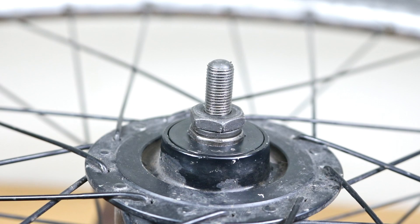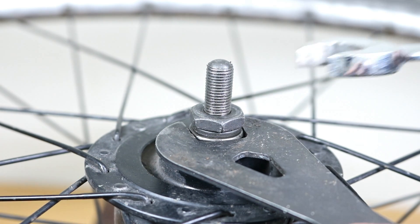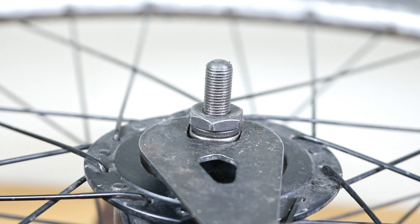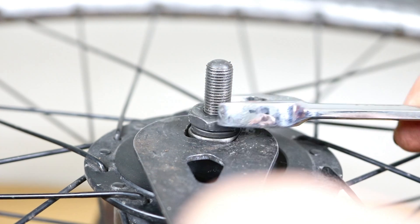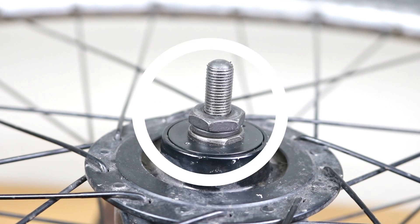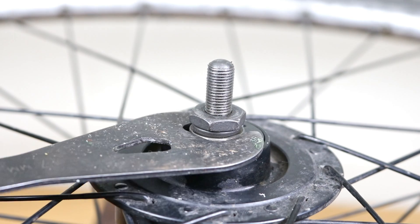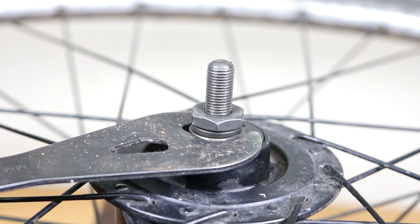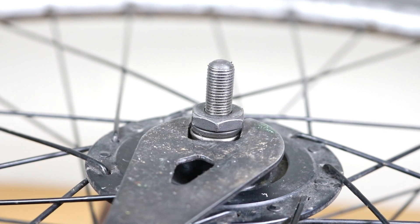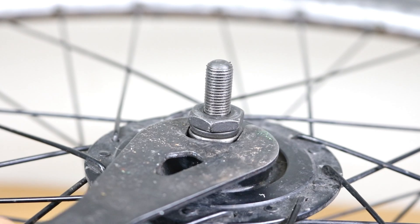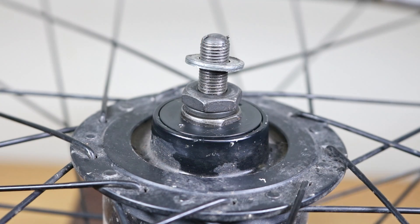Check if the axle spins without any wobbling. If it feels too loose, use the 17mm cone spanner to hold the cone in place and the 17mm spanner to loosen the lock nut anti-clockwise. Turn the cone spanner clockwise a quarter of a turn and tighten the lock nut. Finally, refit the washer and the wheel nut.